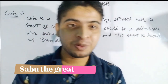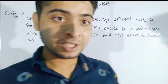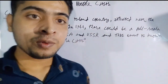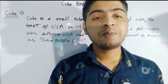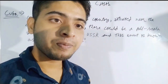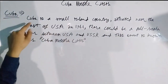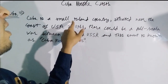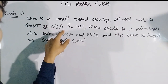Hello. I hope the background is clear for you. This is the first topic where the chapter starts: Cuba Missile Crisis. What was the Cuba Missile Crisis? Cuba is a small island country situated near the coast of USA.